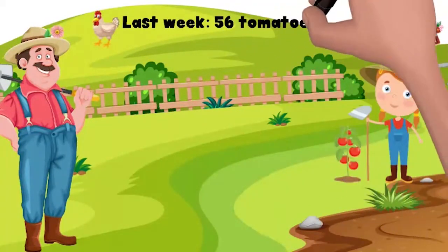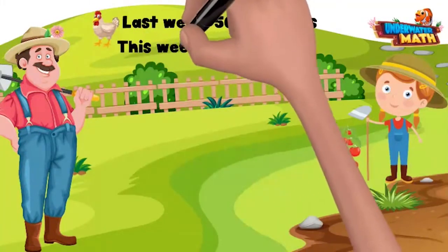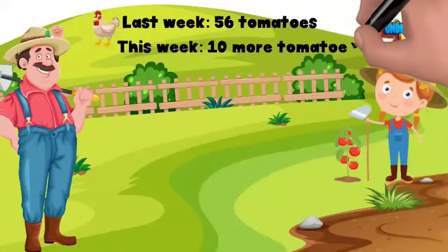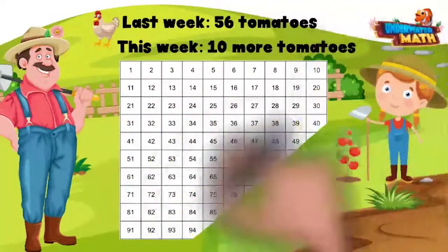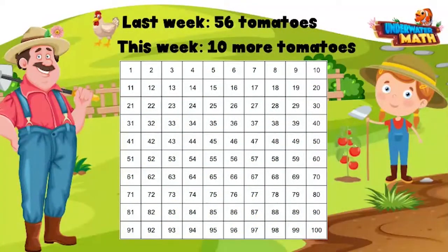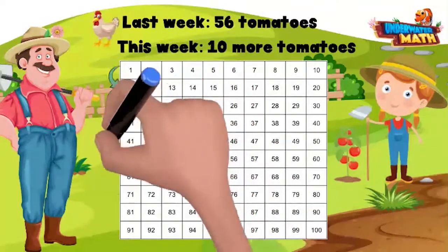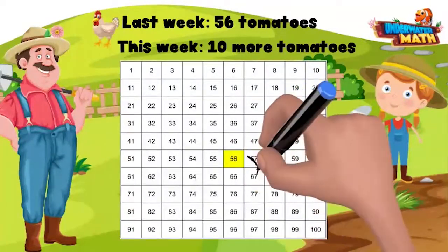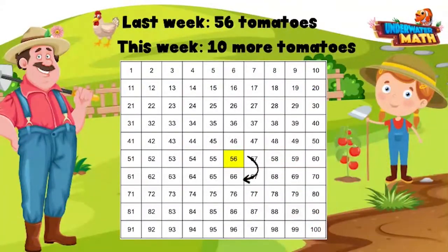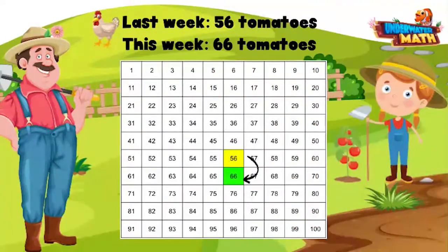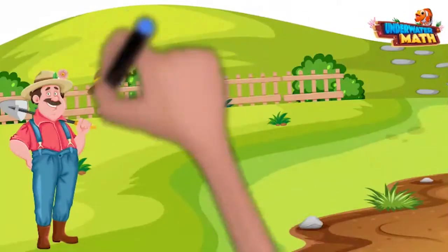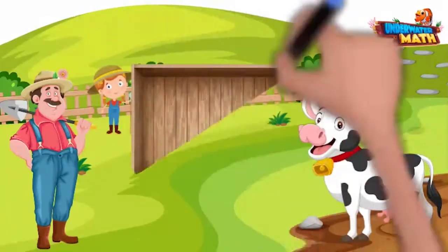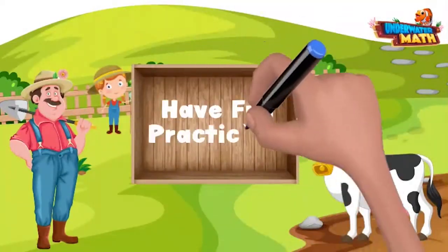Here is my daughter Alice. She grew 56 tomatoes last week. This week she grew 10 more tomatoes. To find out how many tomatoes Alice grew, we can look at a hundred chart to help us out. Remember, as you move from one row to the next, you are counting up or down by tens. If we want to know 10 more, we can look one row down from 56. 10 more than 56 is 66. Great work, Alice!